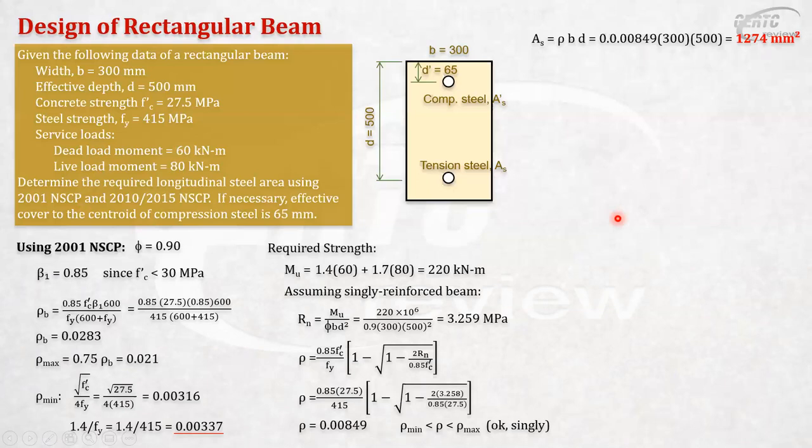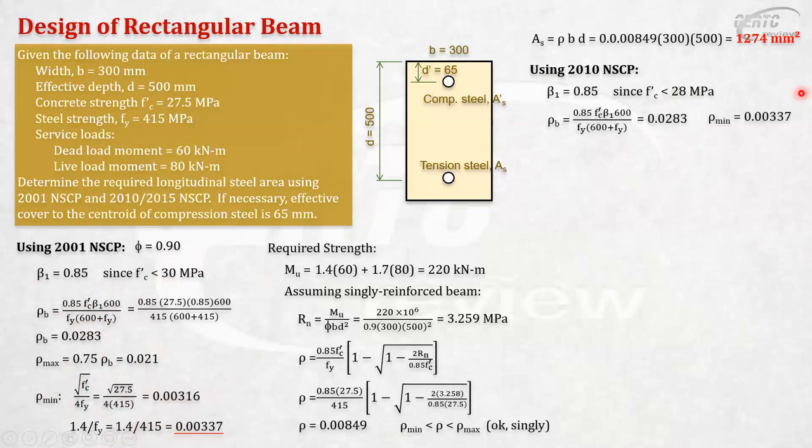Okay. Now, let's have 2010 or 2015. The 2010 and 2015 are the same. Okay. Start with beta 1. Your beta 1 is still equal to 0.85, because less than 28 MPa is our f'c prime. Because if more than 28, unlike here, 30 MPa. This is less than 28. So, if more than 28, that's different. There's a formula. It will be reduced at the rate of 0.05 for every 7 MPa of stress. For each 1 MPa of stress in excess of 28 MPa. Here it's 30 MPa as the basis. Alright. The rho balance is still the same. The same formula. It comes from the strain diagram. The same formula for our rho balance. Okay? There. The rho min is still the same. It's still the same process for getting rho min in 2010 or 2015. So, you have 0.00337.